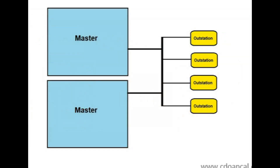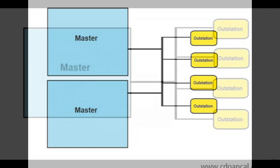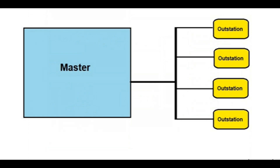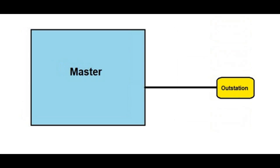A typical system can consist of communication between a set of outstations and one or more masters. The case of communication to more than one master deals with issues that are not appropriate for this introductory class on DNP3, so we will consider only the case of a single master. In fact, this basic class only has to deal with communication between a master and a single outstation. Keep in mind that discussions apply to multiple master and outstation devices, even as we only consider this one-to-one configuration.